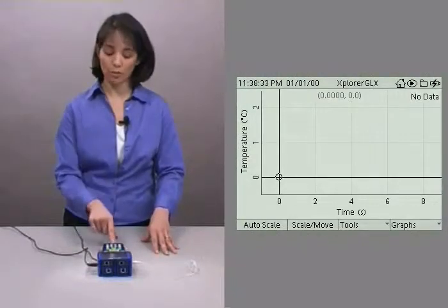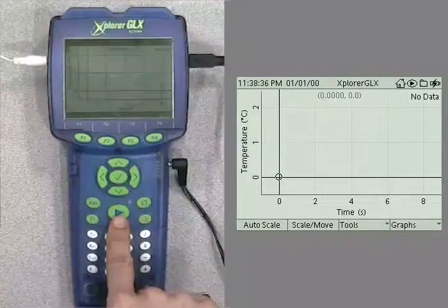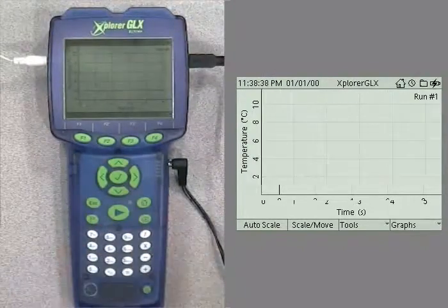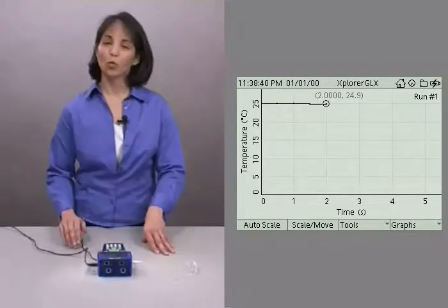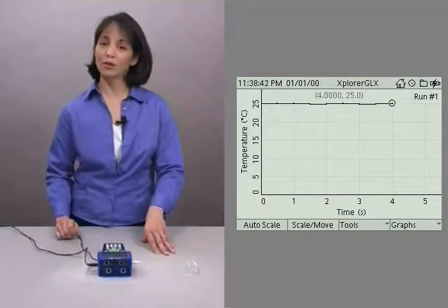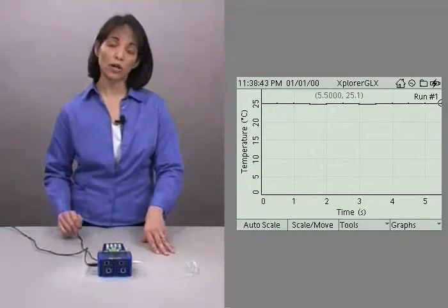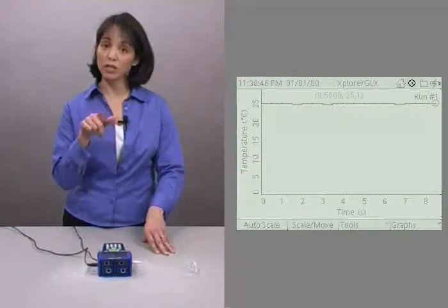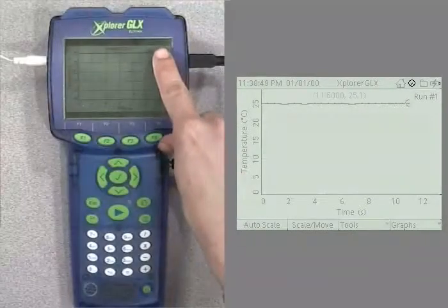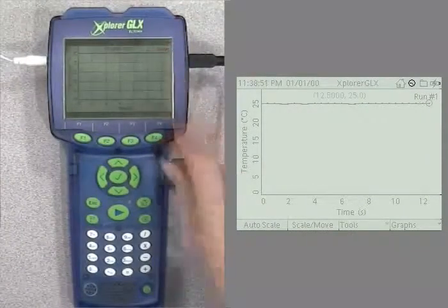So let's go ahead and push the big start-stop button in the middle of the Explorer GLX. We are now collecting two data points every second. One indicator that we are collecting data is that continuously moving clock on the top bar of the Explorer GLX screen.